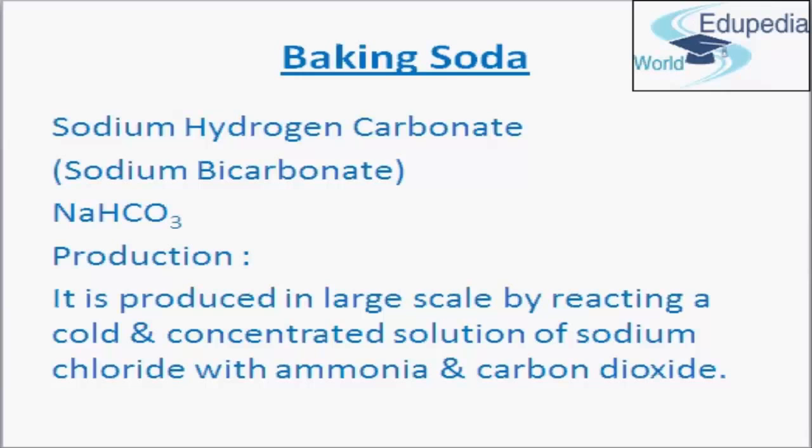Now, production of baking soda or sodium hydrogen carbonate. Sodium hydrogen carbonate is produced on a large scale by reacting with a cold and concentrated solution of sodium chloride — called brine — with ammonia and carbon dioxide. The chemical reaction involved is: NaCl (sodium chloride)